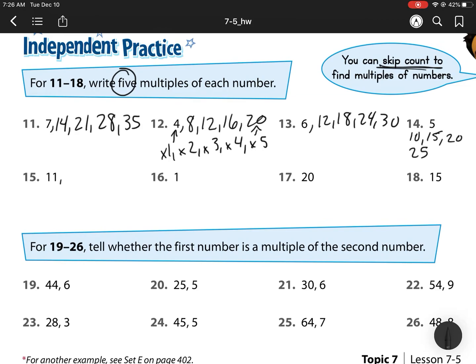For 11, we have 11, 22, 33, 44, 55. For 1, it's easy. It's 1, 2, 3, 4, 5. Don't forget, we have to go 5 each time.